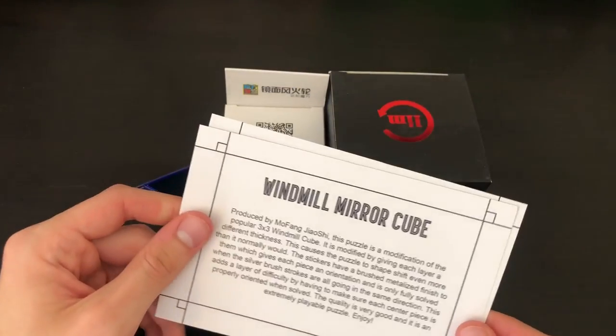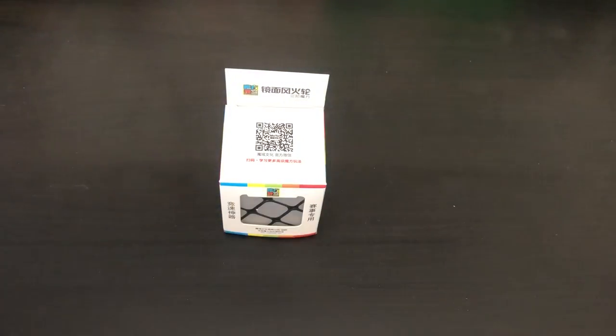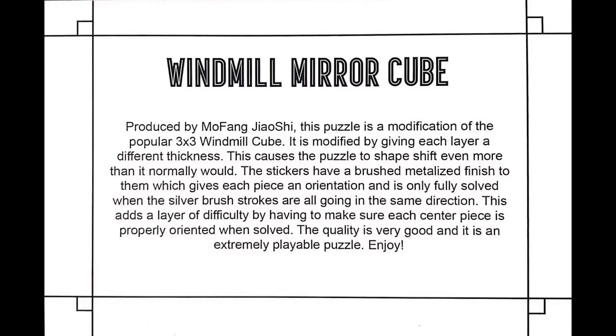Produced from Mo Feng Jiao Shi, this puzzle is a modification of the 3x3 windmill cube. It is modified by giving each layer a different thickness. This causes the puzzle to shape-shift even more than it normally would.